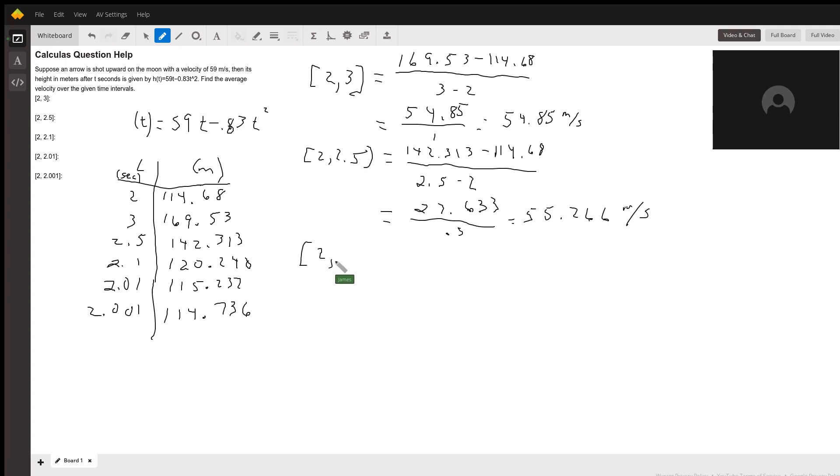And the next one's going to be 2 and 2.1. That's going to equal 120.248 minus 114.68 divided by 2.1 minus 2. That gets me 5.568 divided by 0.1, and that equals 55.68 meters per second.